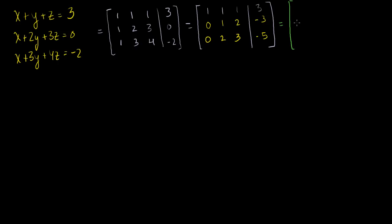I'm going to keep my second row the same: 0, 1, 2, minus 3. To zero out the y-entry in the first row, I'll replace the first row with the first row minus the second row. There's a brief interruption — let me close my window. So: 1 minus 0 is 1, 1 minus 1 is 0, 1 minus 2 is minus 1, and 3 minus minus 3 is 3 plus 3, which equals 6. So the first row becomes 1, 0, minus 1, 6.